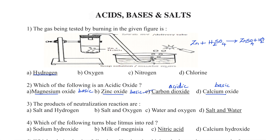Question number 3. The products of a neutralization reaction are: Option A — Salt and hydrogen, B — Salt and oxygen, C — Water and oxygen, Option D — Salt and water. The right answer is Option D — Salt and water. Neutralization reaction is the reaction between an acid and a base. When acid and bases react together, they undergo neutralization reaction and we get the products salt and water.